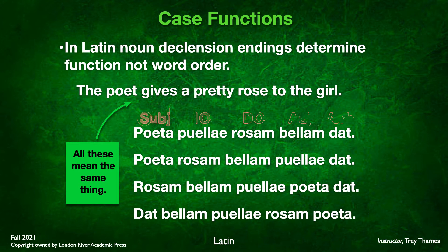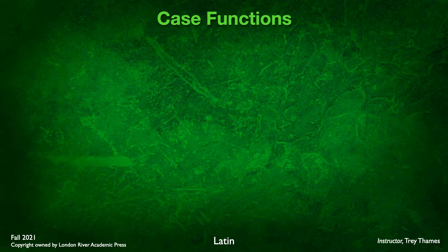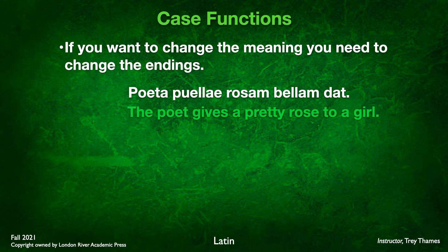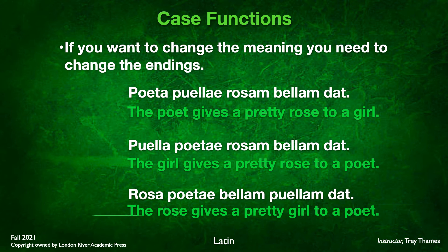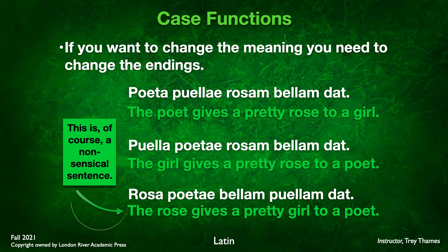If you want to change the meaning, you need to change the endings. First sentence: poeta puelae rosam bellam dat — the poet gives a pretty rose to a girl. But if we change puelae to puella (nominative) and poeta to poetae (dative), now we have 'the girl gives a pretty rose to a poet.' We've simply changed who's giving and who's receiving by changing from nominative to dative or dative to nominative endings.